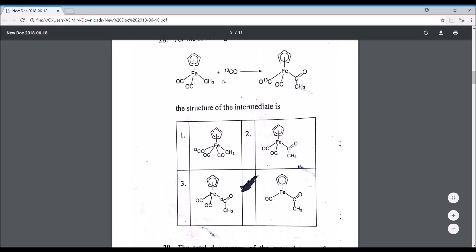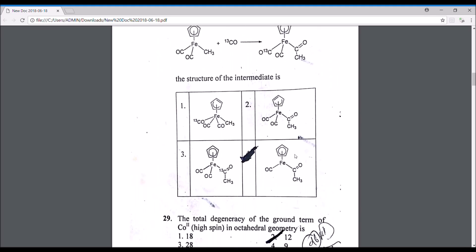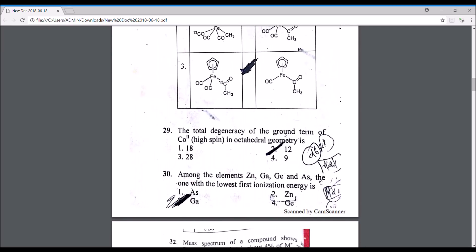For the following reaction, this is a migratory insertion reaction. When you add 13CO, they have asked the intermediate. What happens is first a vacant site is generated. How is a vacant site going to be generated? The CH3 group migrates and attaches to this carbon and forms the fourth option, this intermediate. So this is the correct one.